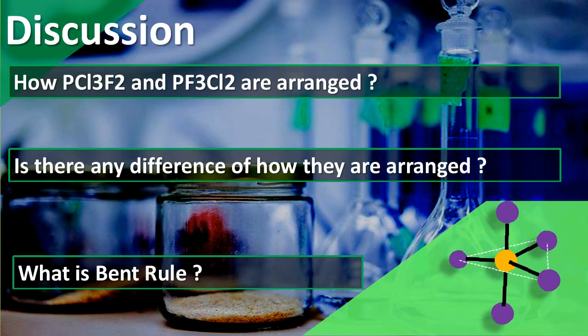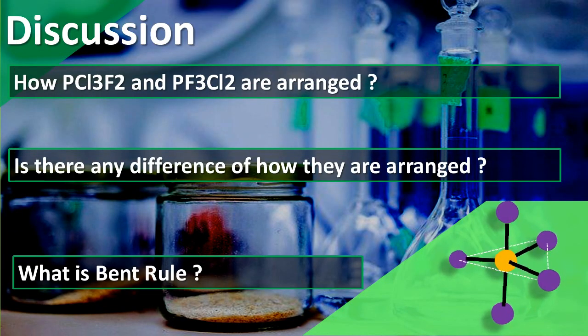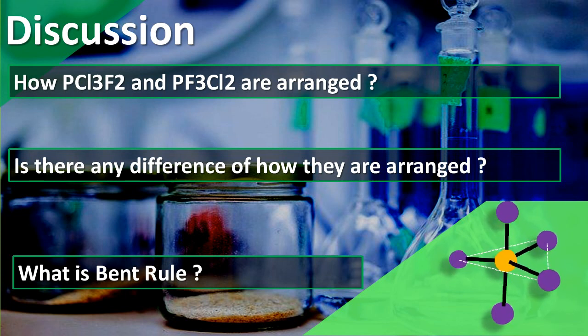Let us discuss some questions. Is there any difference in the arrangement of PCl3F2 and PCl2F3? If yes, then how? And what is the Bent rule?